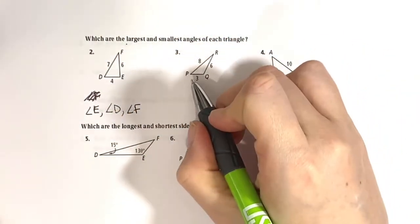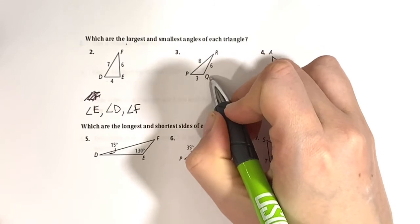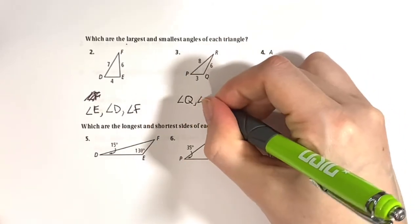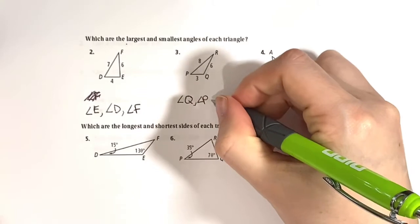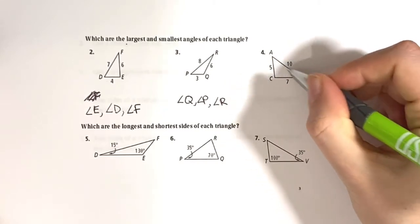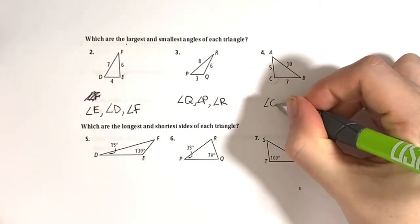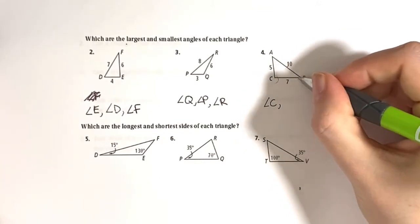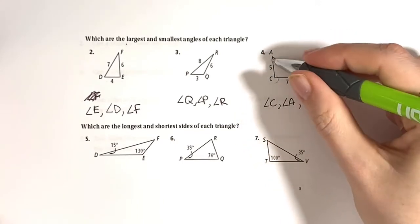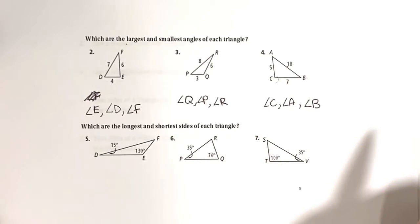One more example: side lengths five, seven, and ten. The biggest side is ten, which is across from angle C, making it the biggest angle. Seven is the middle side, across from angle A, giving the middle angle. Five is the smallest side, across from angle B. So the order from biggest to smallest is C, A, B.